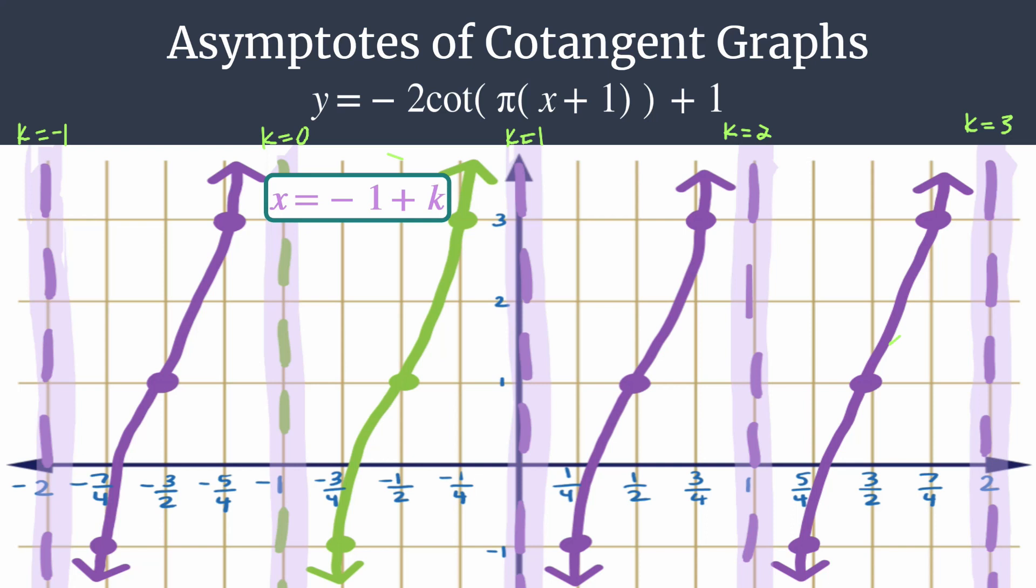That's all we have. Hopefully this helps you feel really confident in finding the vertical asymptotes for any cotangent equation. And hopefully it helped you better understand that term k. Thanks so much for watching.